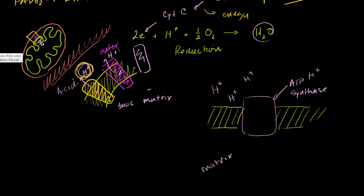Something interesting happens as the protons go through ATP synthase — this is really an area of current research. You can't just take these proteins apart and watch them operate like a regular mechanical engine. These are ultra-small; they have to be in a living system with the right conditions, and it's hard to even see hydrogen protons. But the current model is that as these protons enter and go through ATP synthase, there's actually an axle. You can view this as a housing with an axle, and this is all just a big protein.